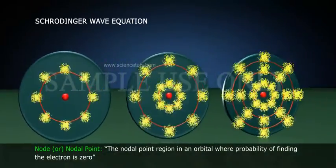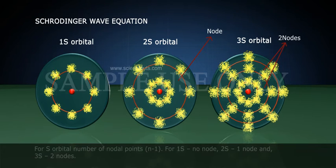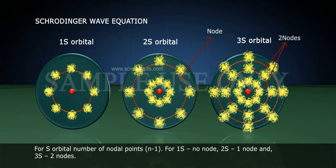Node or nodal point. The nodal point region in an orbital where probability of finding the electron is zero. For S orbital, number of nodal points is n minus 1. For 1S, no node. 2S, one node. And 3S, two nodes.